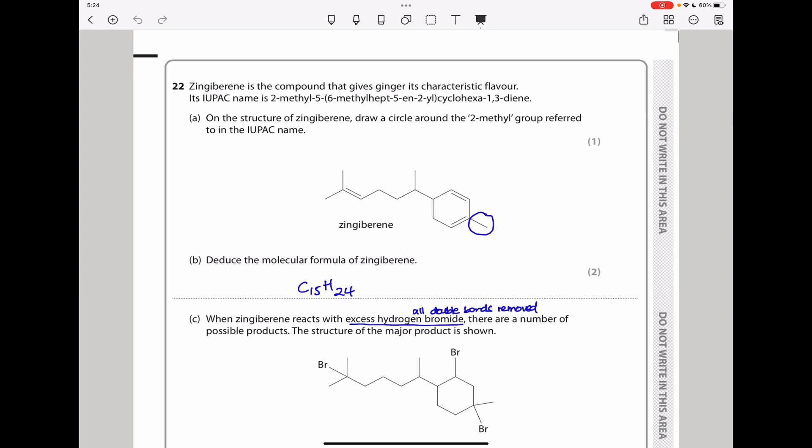Question 22 says: Zingiberine is the compound that gives ginger its characteristic flavor. Its IUPAC name is 2-methyl-5-(6-methylhept-5-in-2-yl)-cyclohexa-1,3-diene. It's a very long name. So they say part A, on the structure of zingiberine, draw a circle around the 2-methyl group referred to in the IUPAC name. I think this should be the methyl group they're referring to based on this part, 2-methyl.